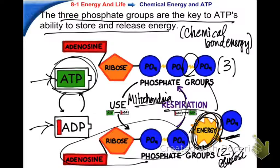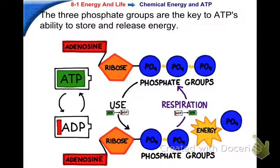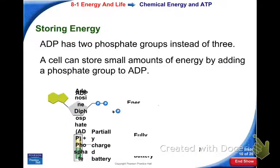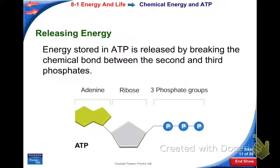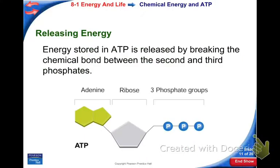Where does ATP store its energy? In the chemical bonds between the phosphate groups. Your cells are constantly taking ATP, pulling off a phosphate, and using that energy to do a cell process. The mitochondria is constantly taking ADP and free phosphates, sticking them back together as fast as it can, and pumping out ATP to be used elsewhere in the cell. Energy stored in ATP is released by breaking the chemical bond between the second and third phosphates, and energy is required to glue it back on.